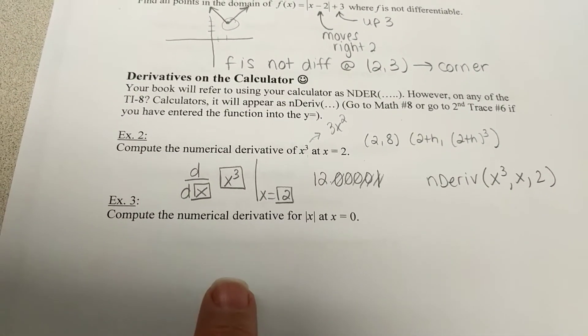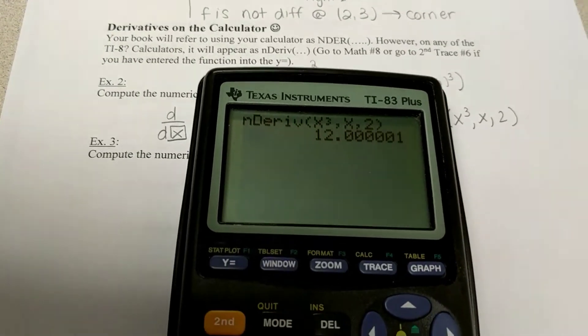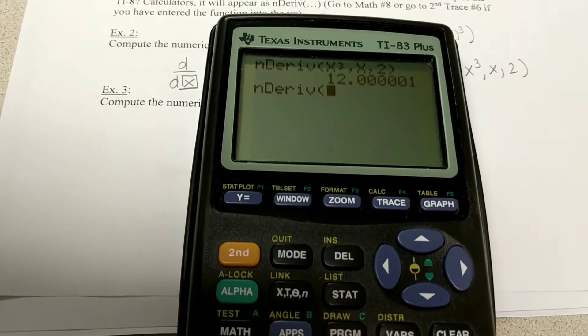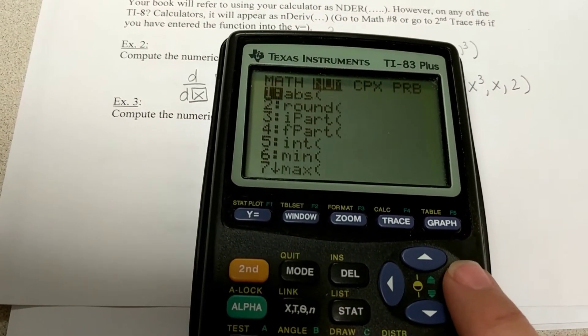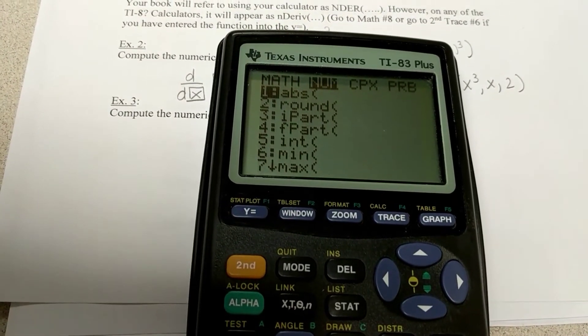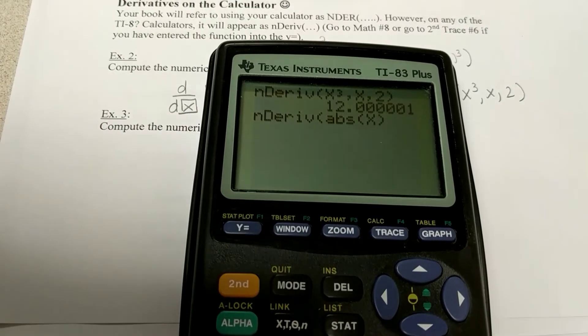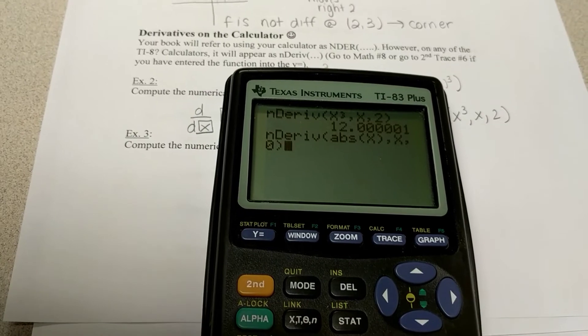So, now, do it with absolute value of x. And for those of you that don't know, you can just do math 8. That's your nDeriv. To do absolute value of x, you go to math and then over to number. And abs is absolute value of x. So, go ahead and take a minute and do that. And they want the slope at 0.